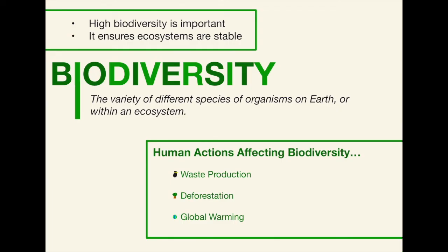Finally, we have biodiversity. High biodiversity is very important as it ensures ecosystems are stable. Biodiversity is simply the variety of different species of organisms on Earth or within an ecosystem. Humans couldn't survive alone without animals — even little animals like bees are really important to help plants and flowers grow into things that we really need. However, there are human actions that affect biodiversity — things like waste production, deforestation, and global warming are all destroying habitats for animals and plants and effectively killing them off.